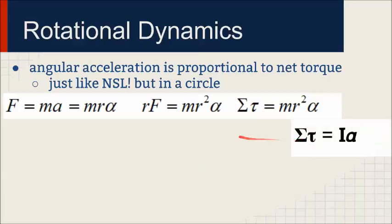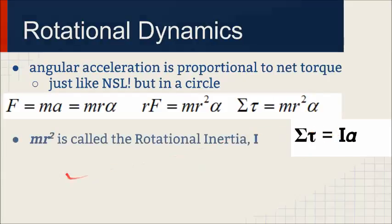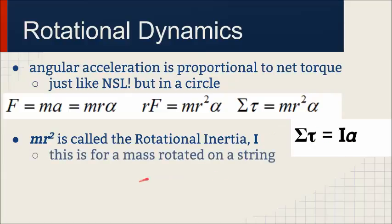And so Newton's second law of rotation is the sum of all torques equals IA. This MR squared is called the rotational inertia, which we label as I. This is for a single mass rotated on a string. It's actually referred to as the mass distribution. In linear motion or Newton's second law, we had a single point mass accelerated with a force. Now it depends on where the mass is located, and so we refer to the rotational inertia for that.